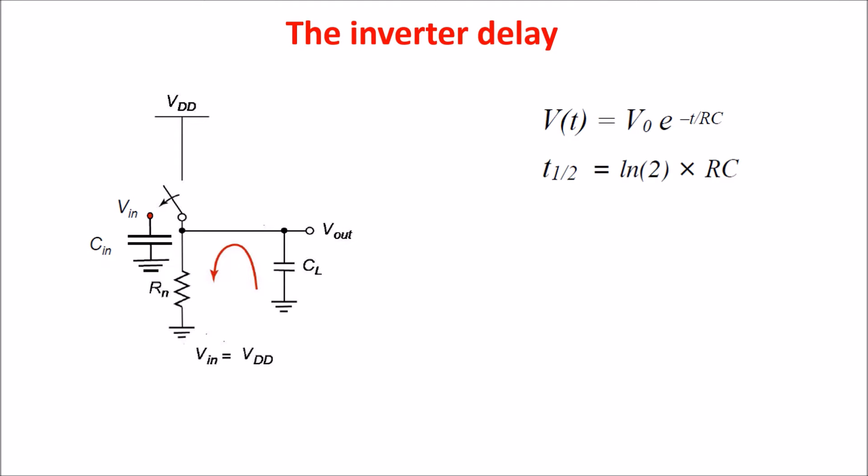If we imagine to have a capacitive load CL, the time we need for the transition high-low is the time in which the output goes from VDD to VDD/2. And this is equal to this relation where 0.69 is the natural logarithm of 2 and Rn is the resistance of N-channel MOSFET.